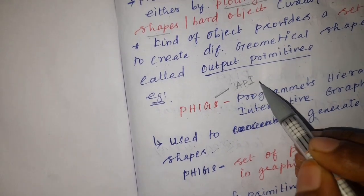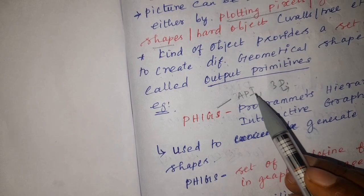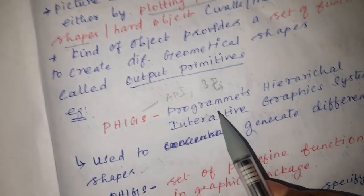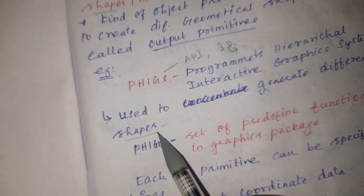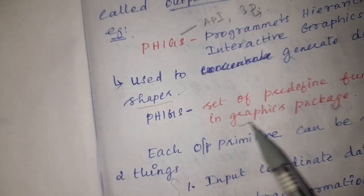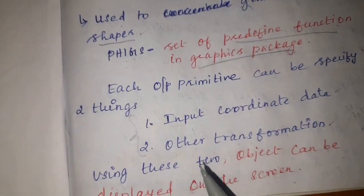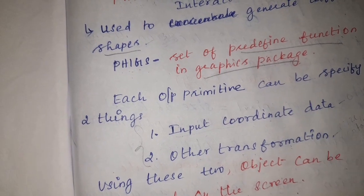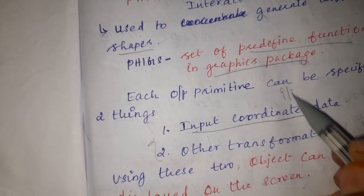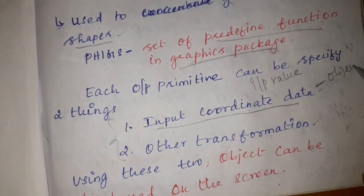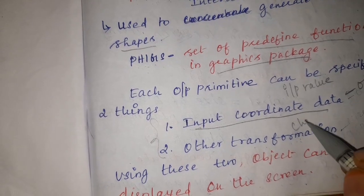An example is PHIGS, which is an API that renders and displays objects in a 3D way. API stands for Application Program Interface. PHIGS is abbreviated as Programmer's Hierarchical Interactive Graphic System. It is a graphics package containing a set of predefined functions. Each output primitive can be used to display two things: first, input coordinate data, which is the input value for a particular object.